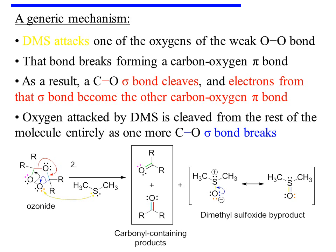Mechanistic arrows are often not shown for the reductive workup. However, to understand the outcome, you can envision the flow of electrons as follows. Dimethyl sulfide attacks one of the oxygens of the weak oxygen-oxygen bond. That bond, in turn, breaks, and its electrons are used to form a carbon-oxygen pi bond. As a result, the red carbon-oxygen sigma bond also cleaves, and its electrons become the other carbon-oxygen pi bond.